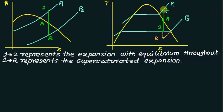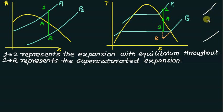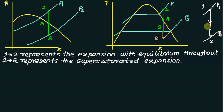We can represent this supersaturated expansion by removing the dome and having only two lines: one is P1 and one is P2. This expansion from P1 to P2 is called supersaturated expansion.